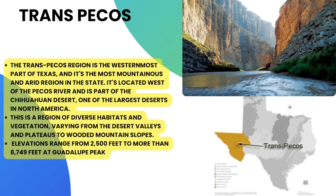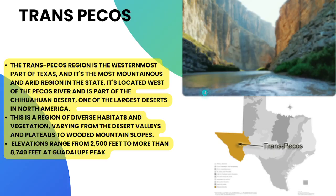The final region is Trans-Pecos, the westernmost geographic section of Texas, just as the Piney Woods was the easternmost. Located west of the Pecos River, it is part of the Chihuahuan Desert, one of the largest deserts in North America. This region has diverse habitats and vegetation, varying from desert valleys and plateaus to wooded mountain slopes. Elevations range from 2,500 feet to more than 8,749 feet at Guadalupe Peak — the highest elevation in the state of Texas.